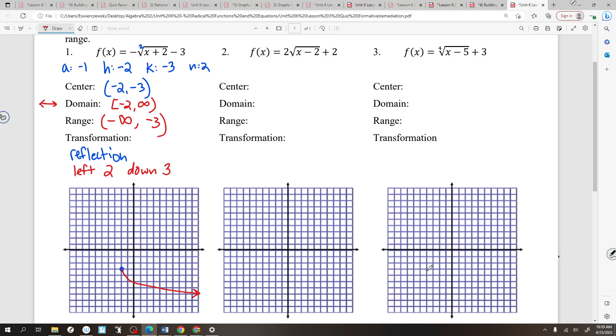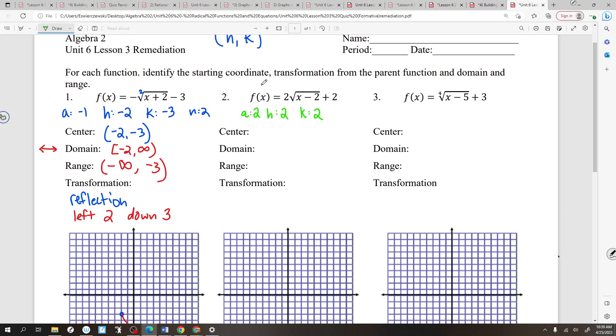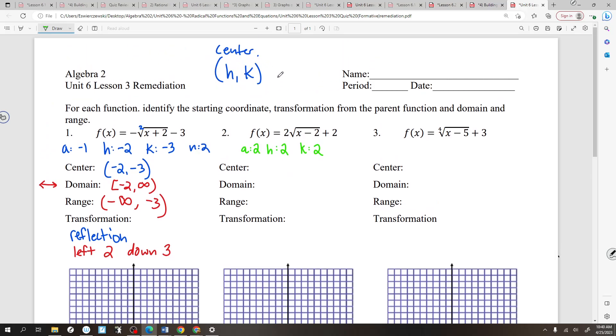Let's do one more. Number 2. Changing colors for fun. What is A? 2. What is H? It would be positive 2. What would K be? 2. So our center point or starting point in this case technically would be where? H comma K. So it would be at 2 comma 2.